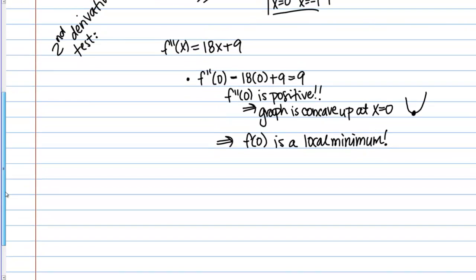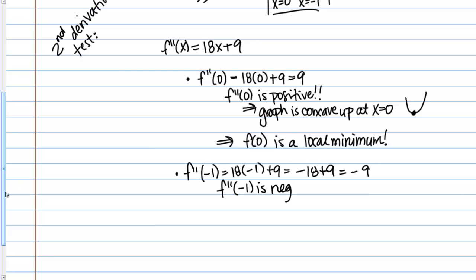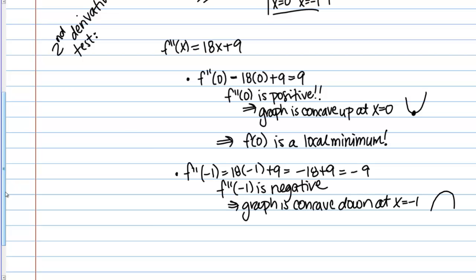Now let's do the other critical point, x = -1. We evaluate f''(-1) by plugging into the second derivative: 18(-1) + 9 = -18 + 9 = -9. So f''(-1) is negative, which tells us the graph is concave down at x = -1. Since it's concave down at a critical point, x = -1 must be a local maximum. So f(-1) is a local maximum.